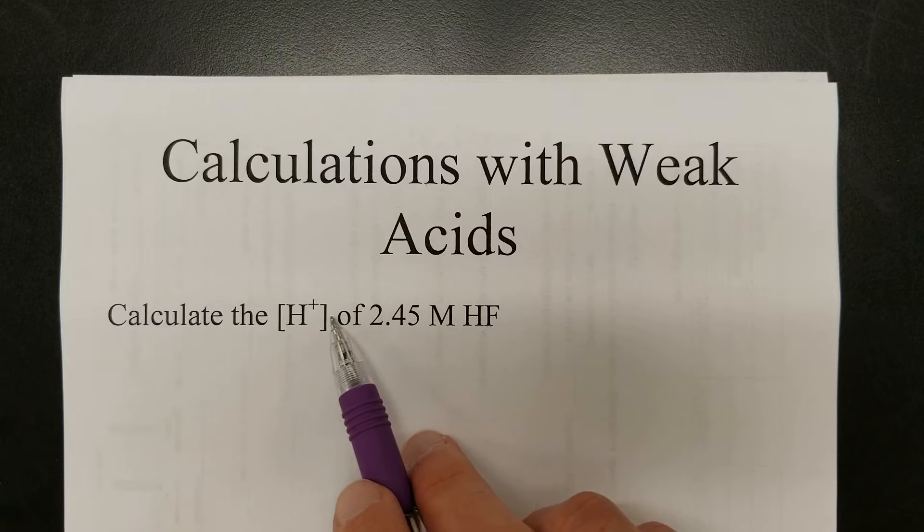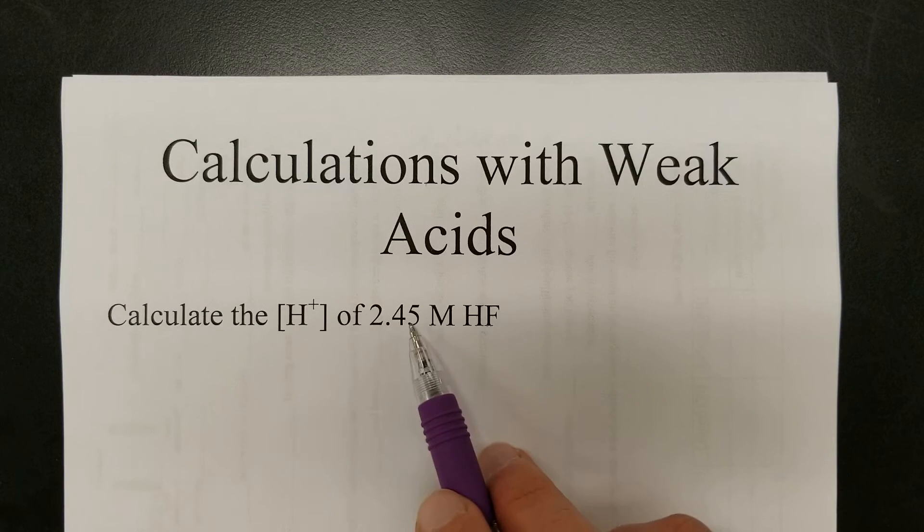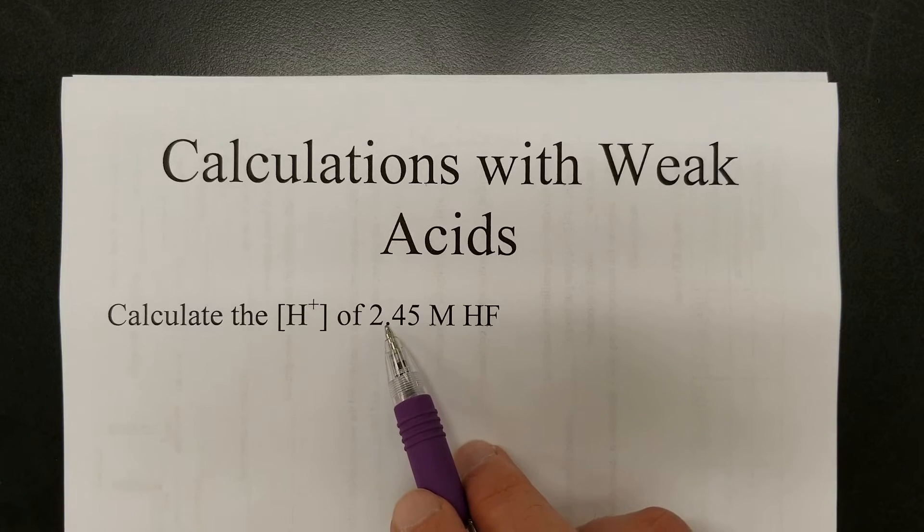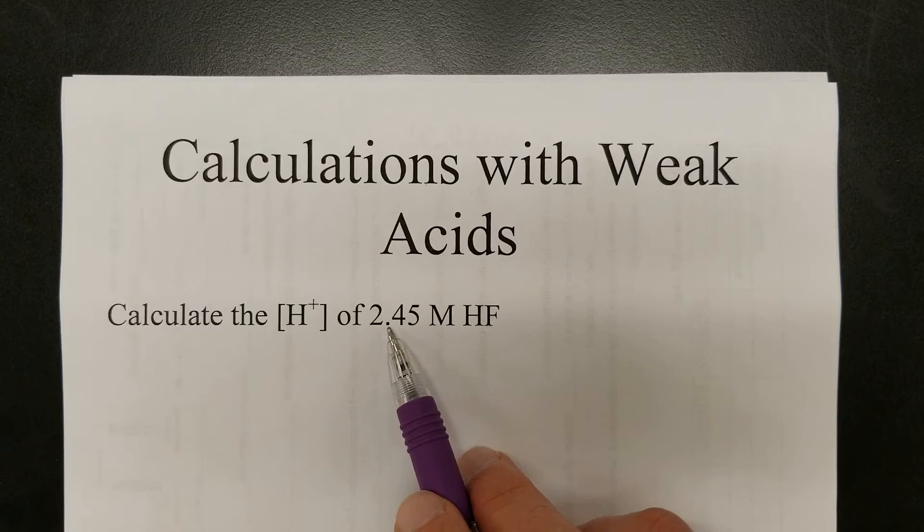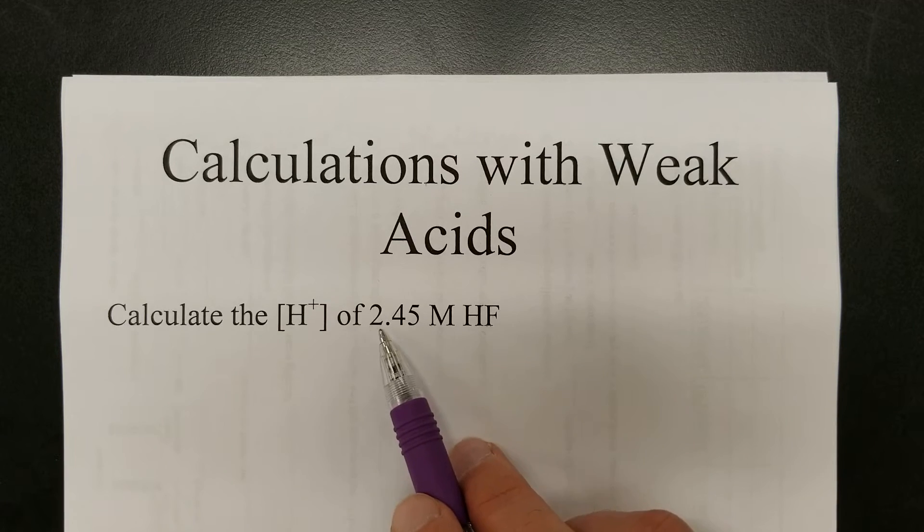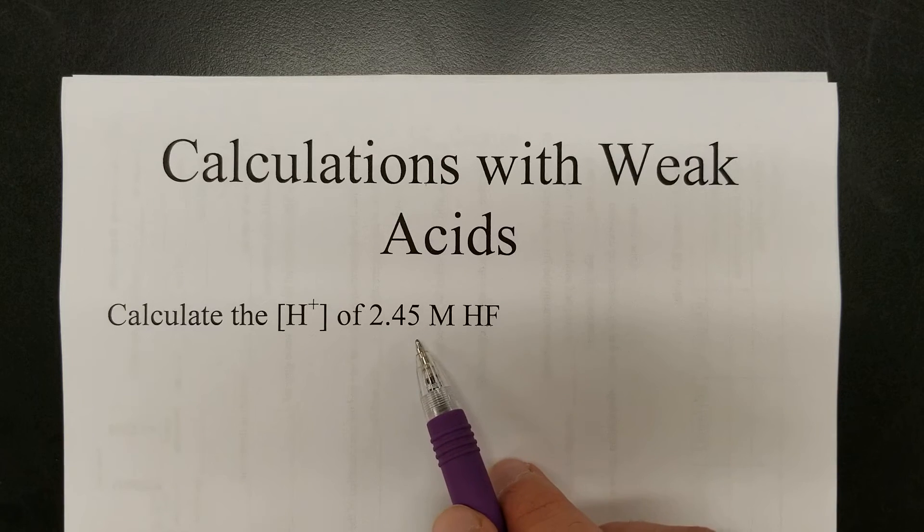So the answer to this question, what's the concentration of hydrogen for a strong acid, would be the same as the concentration of the acid. The answer would be 2.45 if this was a strong acid, but being a weak acid, the answer is not 2.45 molar.